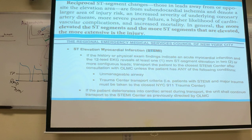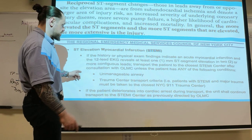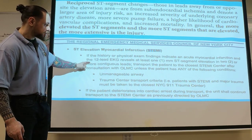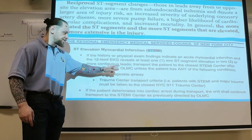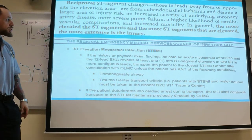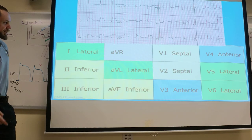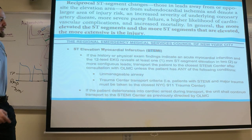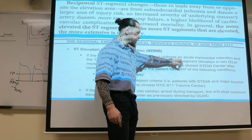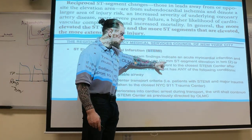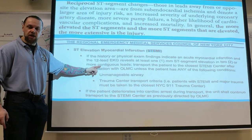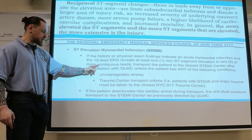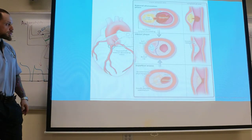Per protocol, if you have at least one millimeter of ST elevations in two contiguous leads, and the history and physical exam suggest MI — patient in chest pain — you transmit and take them to the cath lab. But first you go to online medical control so they can evaluate. Contiguous leads look at the same aspect of the heart.